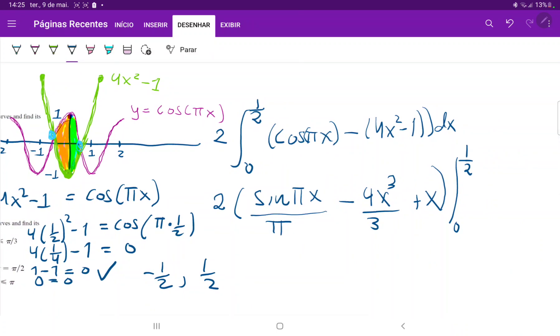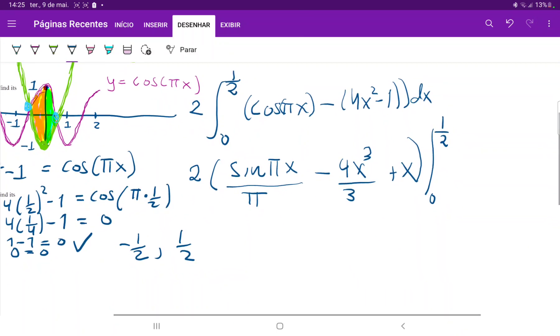Let us plug in the upper boundary and the lower boundary. This is 2 times sine of π over 2, which equals 1, so this is just 1 over π, minus 4 over 3 times 1 half cubed, plus 1 half. If we plug in the lower boundary 0, we get 0 for all terms because sine of 0 is 0. We're not even going to plug that in.